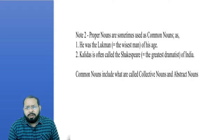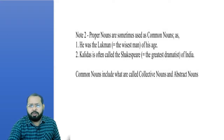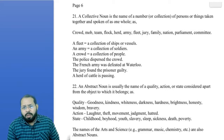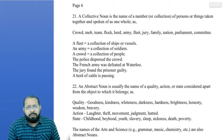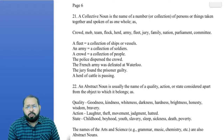Common nouns include what are called collective nouns and abstract nouns. A collective noun is the name of a number or collection of persons or things taken together and spoken of as one whole.